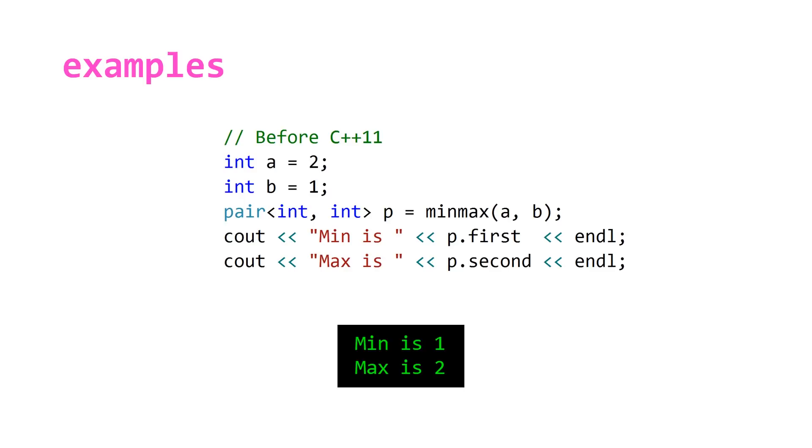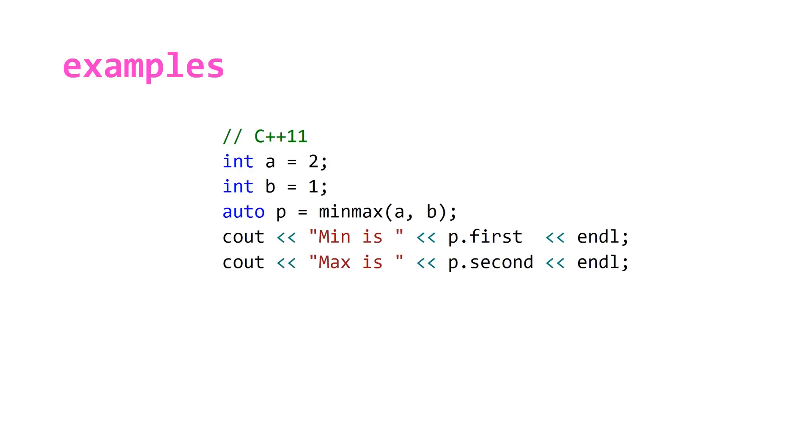With C++11 we now have type inference so you can replace the explicit pair of integers with auto and do the same thing.